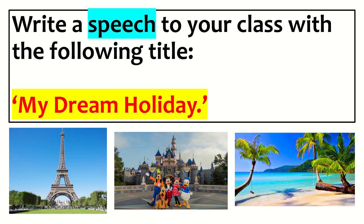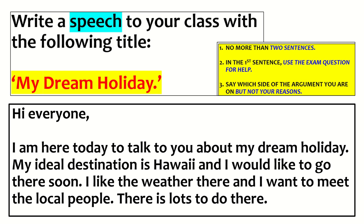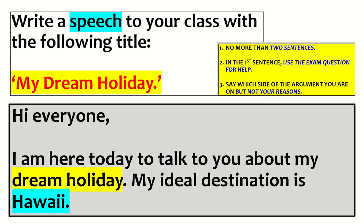For another question — write a speech about your dream holiday — here's a bad intro: 'Hi everyone, I'm here today to talk to you about my dream holiday. My ideal destination is Hawaii and I would like to go there soon. I like the weather and I want to meet the local people.' That's bad because they're talking about reasons in the intro. A much better version would be: 'Hi everyone, I'm here today to talk about my dream holiday. My ideal destination is Hawaii.' Simple, but much better.